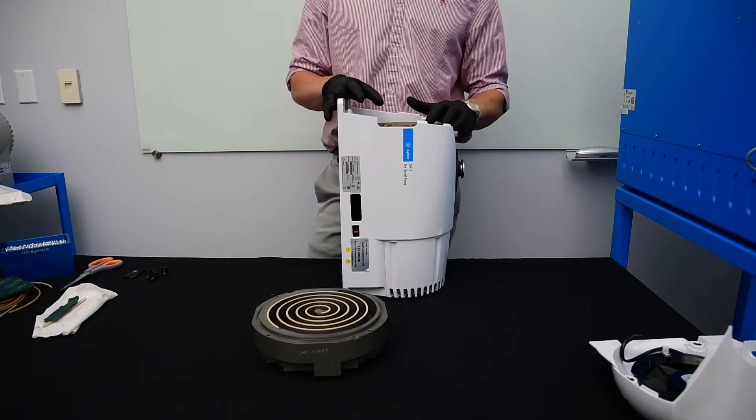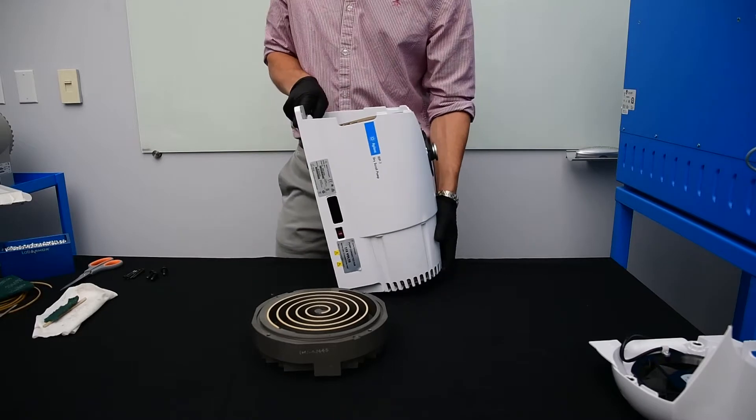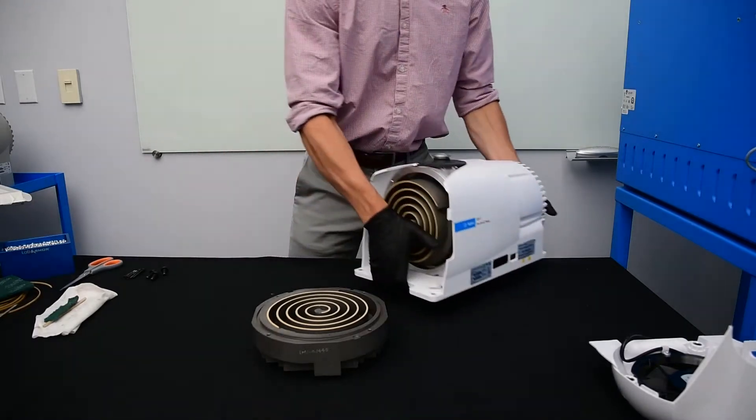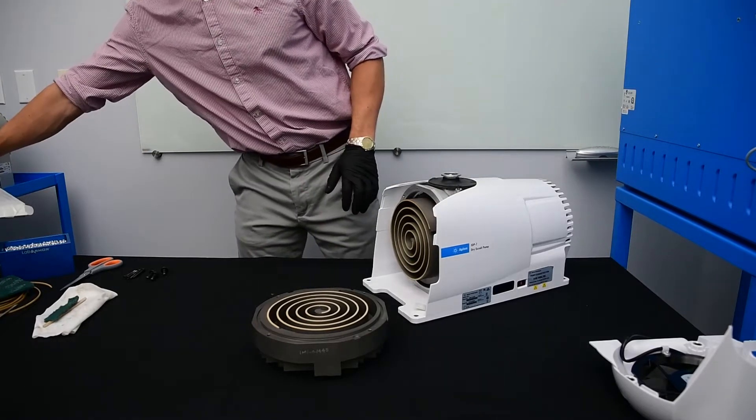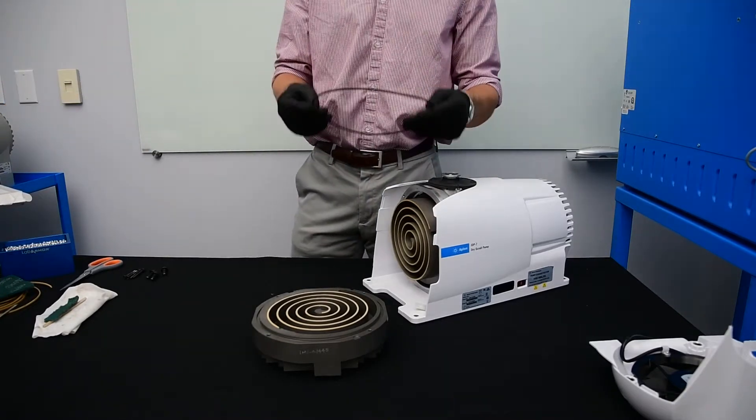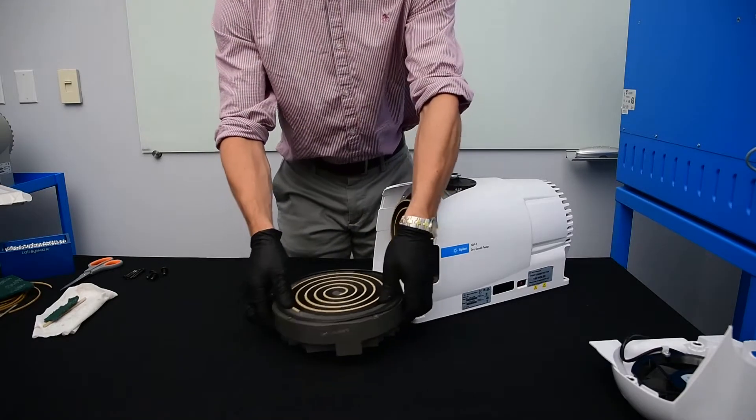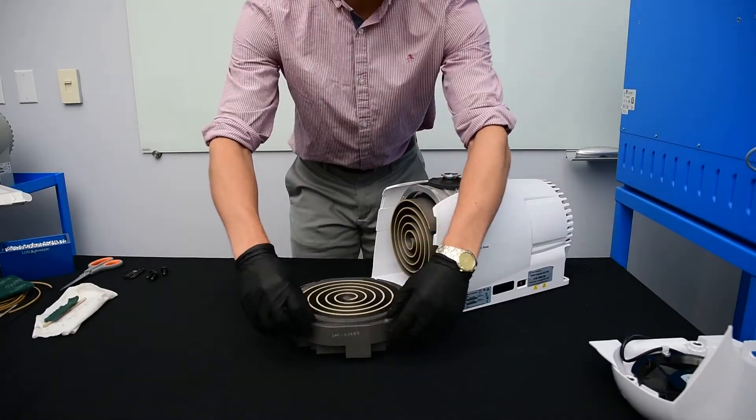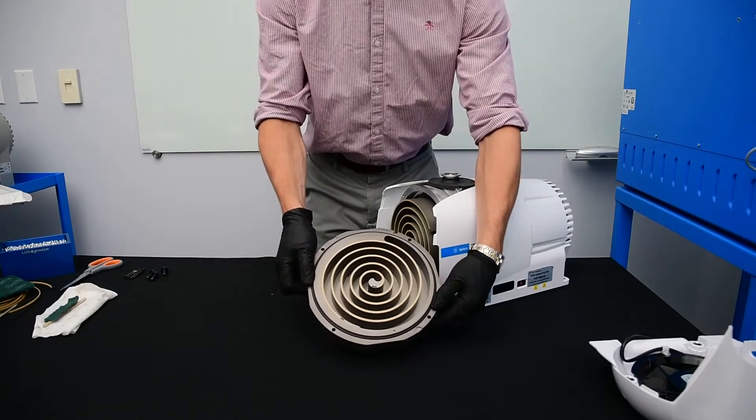So now I've just finished installing the tip seal into the orbiting plate. I'm going to put the pump down on the table and grab my new o-ring from my tip seal kit. We're going to install it in the groove.